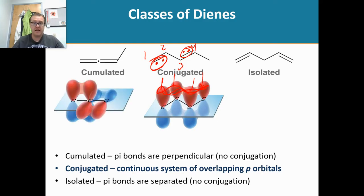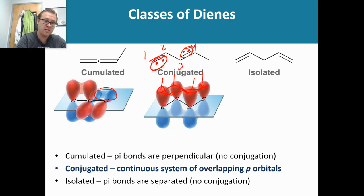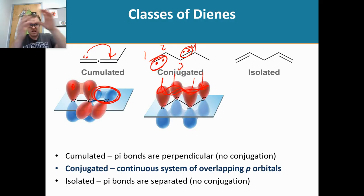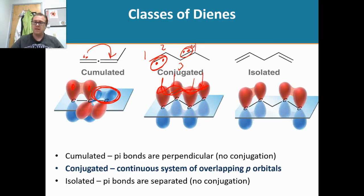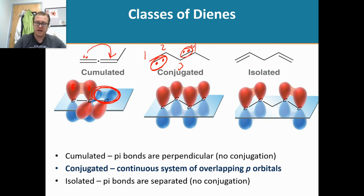In an accumulated diene, the p orbitals on one side and the other are not on the same plane — they're not all above or below — so those electrons cannot delocalize across the system. In an isolated diene, there's a major gap between the two sets of p orbitals and the electrons can't jump over that gap to the other set. Comparing conjugated versus isolated: in the conjugated system everything is connected, while in the isolated system we have a gap.